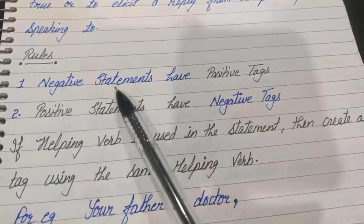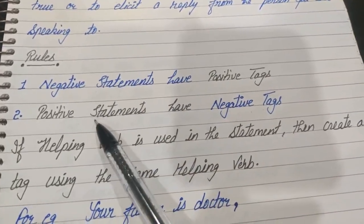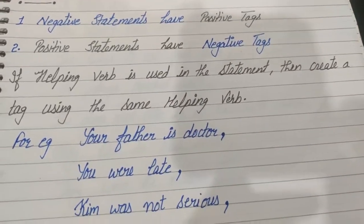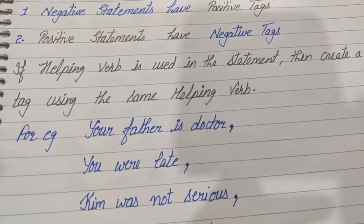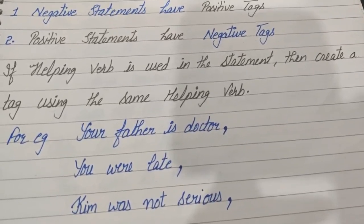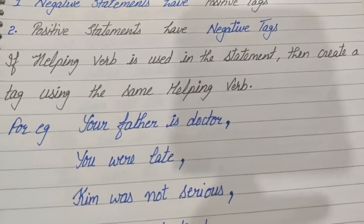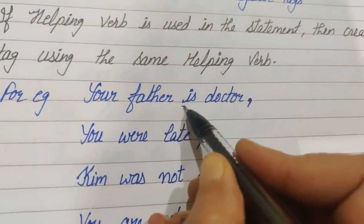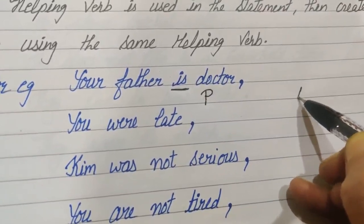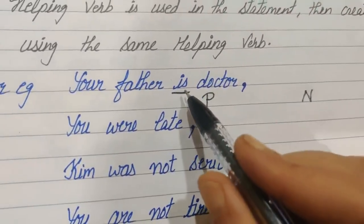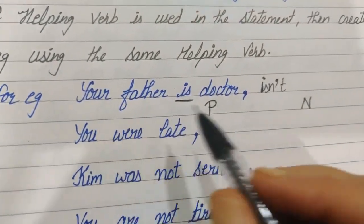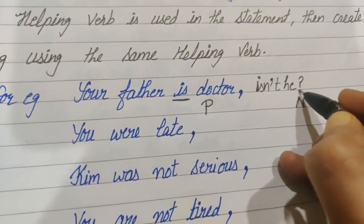What does it mean? If our statement is negative, the tag must be positive, and if the statement is positive, the tag must be negative. If a helping verb is used in the statement, create a tag using the same helping verb. For example: 'Your father is a doctor' — which helping verb is given? 'Is.' It's a positive statement, so our tag would be negative. 'Is' negative becomes 'isn't,' and for 'your father' we use the pronoun 'he.' So the answer becomes: isn't he?